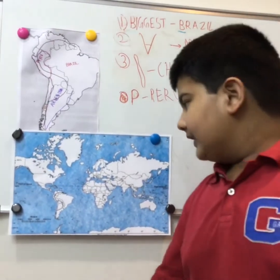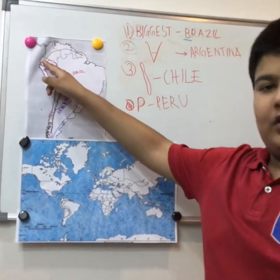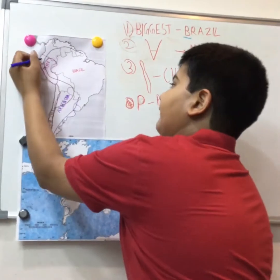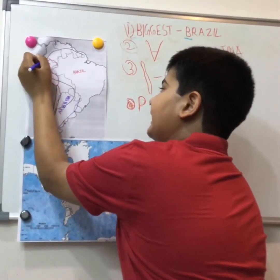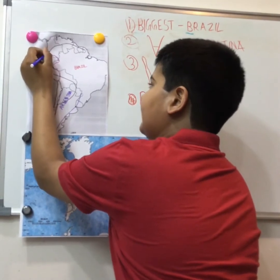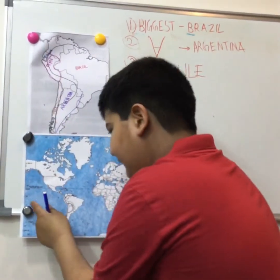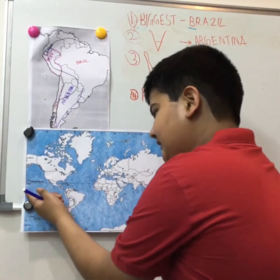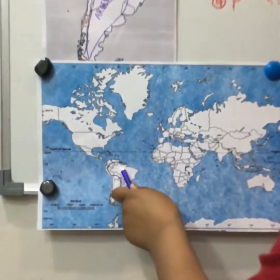The fifth country is Ecuador. It is known as Ecuador because the equator passes through it. If we look at a world map, we would find that the equator passes through this very small country.